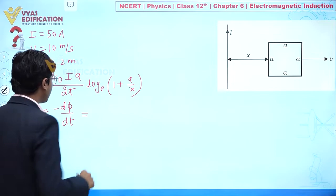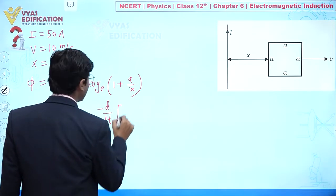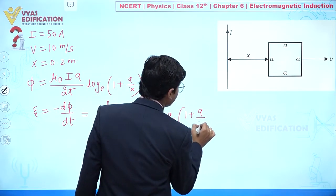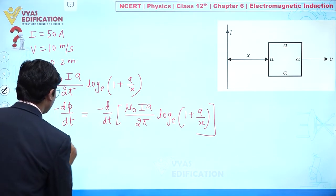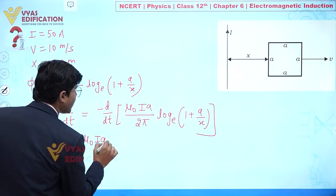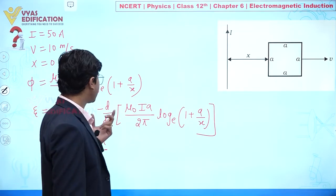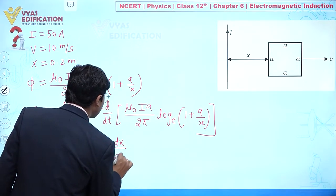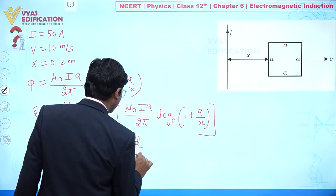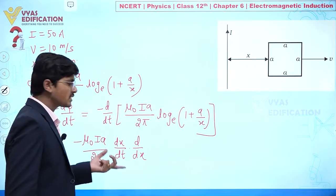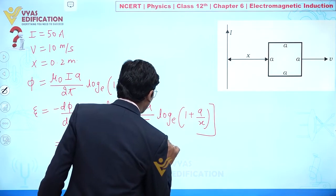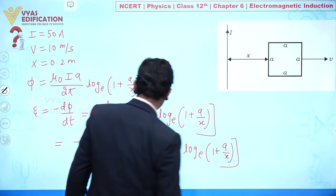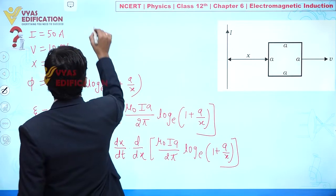Differentiating with respect to t, we apply the chain rule: d/dt = (dx/dt) · d/dx. So ε = −(μ₀Ia / 2π) · v · d/dx [ln(1 + a/x)], where dx/dt = v is the velocity.